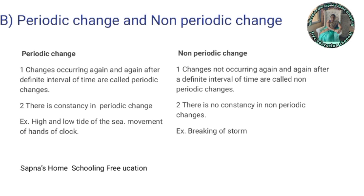There is constancy in periodic change — it occurs at a constant interval of time. There is no constancy in non-periodic change. Examples of periodic changes: the high and low tide of the sea, and the movement of the hands of a clock. An example of non-periodic change is the breaking of a storm.